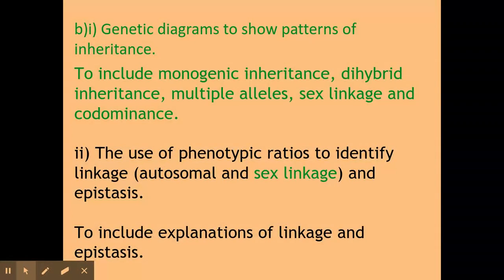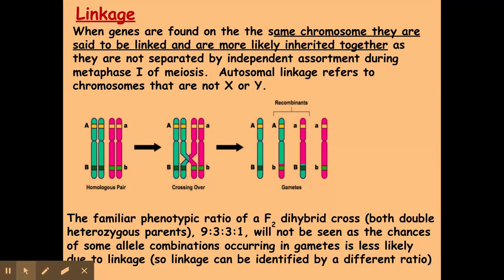Autosomal linkage is to do with chromosomes that contain genes that are closely linked in terms of their position on the chromosomes. As you can see on this particular chromosome here, I have genes A and B and they're quite far apart — their loci is quite far apart.